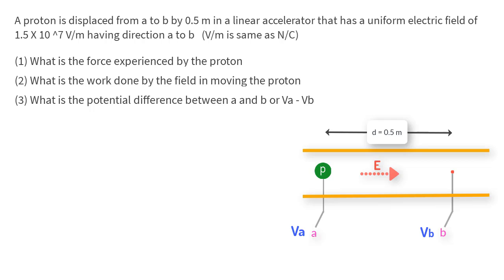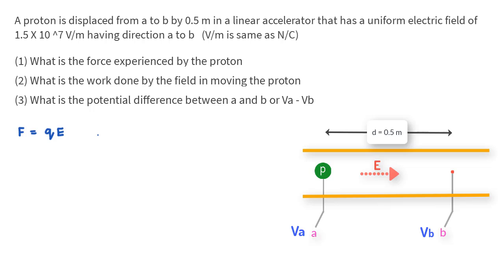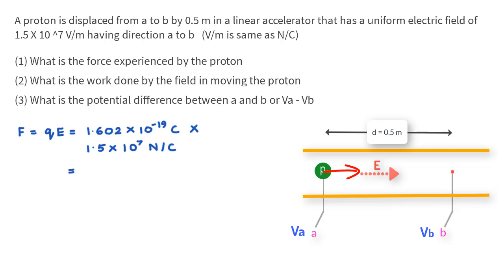The first question: what is the force on the proton? The force equals Q times E and is in the same direction as the electric field, because the electric field direction is determined by a positive test charge, and since the proton is also a positive charge, the force on it is in the direction of the field. This equals 1.602 × 10⁻¹⁹ coulomb × 1.5 × 10⁷ N/C, which gives 2.4 × 10⁻¹² newtons.